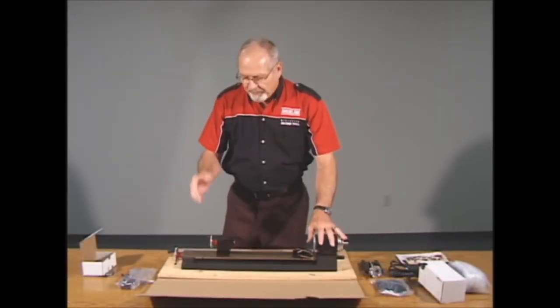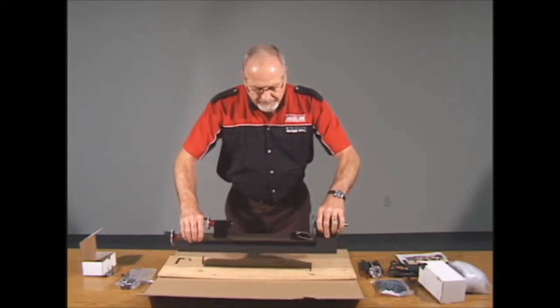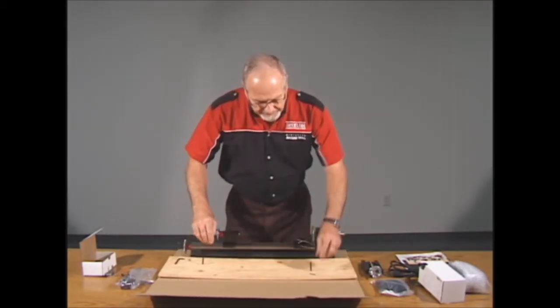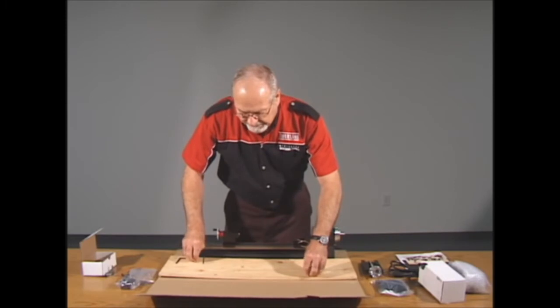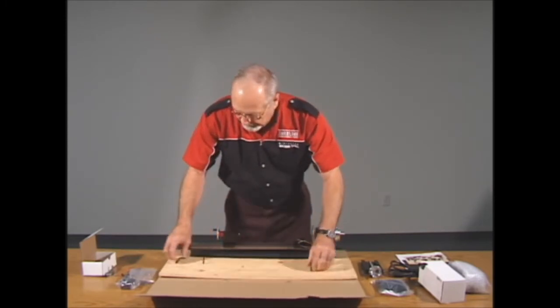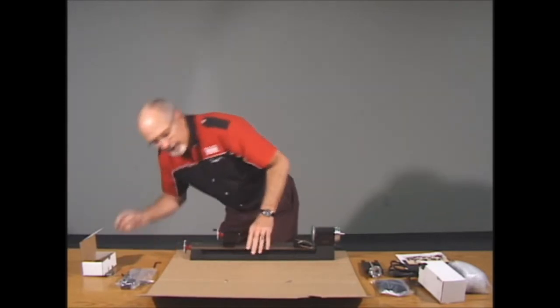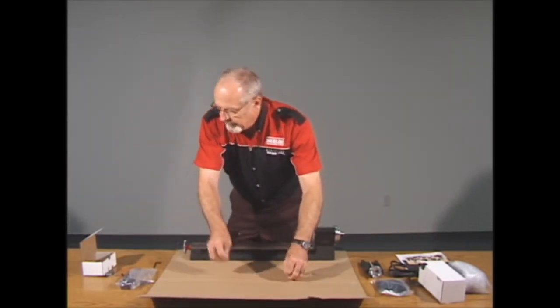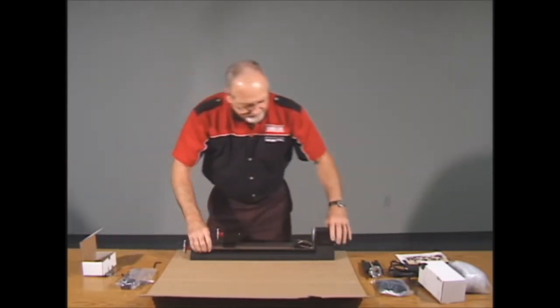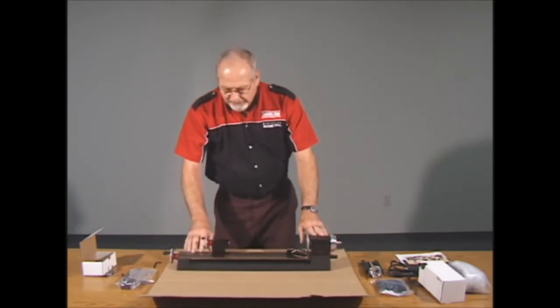I've removed the two nuts and washers. Now we can just lift the lathe off the base. What I'm going to do is remove the wood and work on top of the cardboard here to protect the surface of the table.